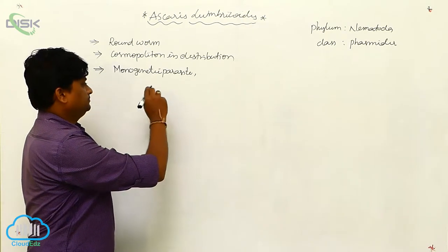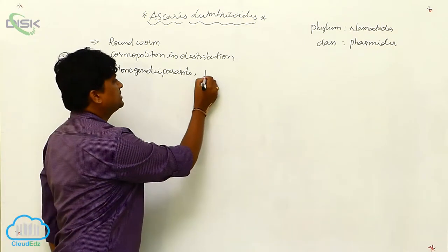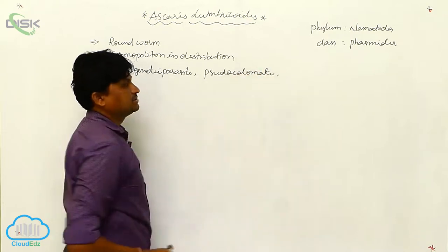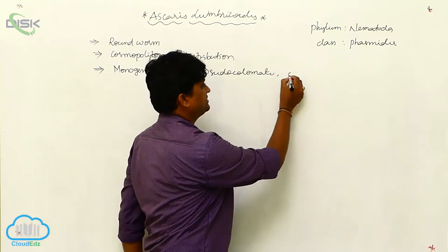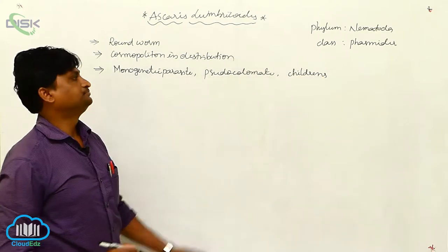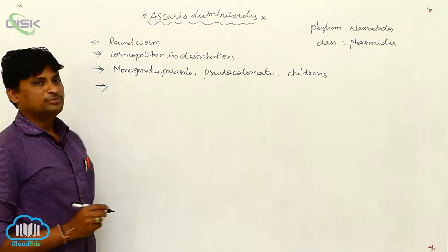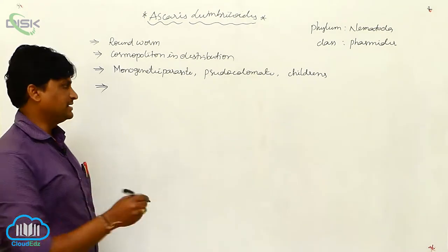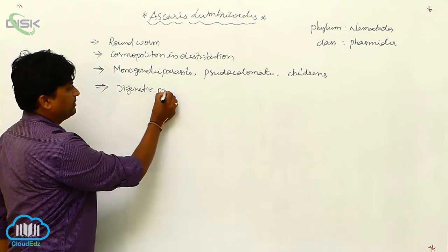Ascaris lumbricoides is a pseudocoelomate and a monogenetic parasite. It is mostly infects human beings, especially children. It is also a digenetic parasite, meaning there are two sexes present — male and female differentiation will be present — which is why we call it a digenetic parasite.